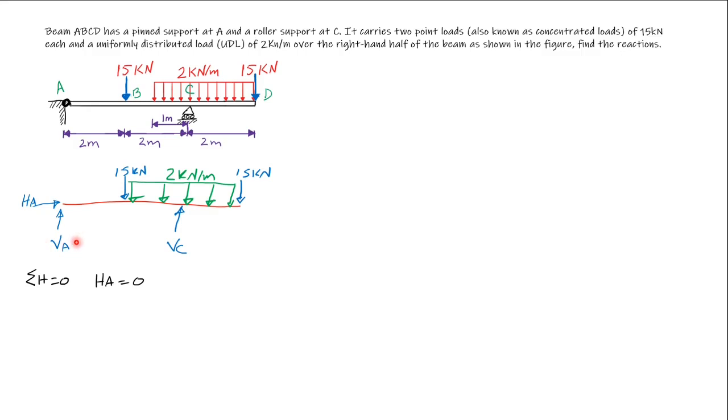To find VC we take moment about point A. Please note the moment of the UDL is the resultant total UDL load which is 2 times 3 equals 6 kN, multiplied by the distance from A to the line of action of that resultant which is 4.5. In other words, this distance from here to here which is 3 meters plus half of this distance of the UDL, and that is 3 divided by 2 which is 1.5, so 3 plus 1.5 that would be 4.5.